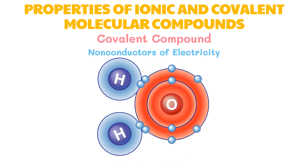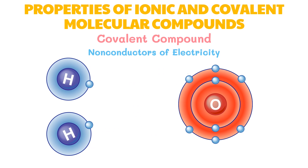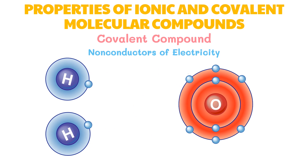Ionic compounds dissociate into ions when dissolved in water, and those ions conduct electricity. On the other hand, covalent compounds separate into molecules rather than ions when dissolved in water, so they typically do not conduct electricity.